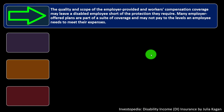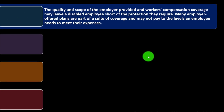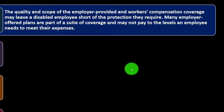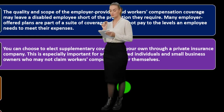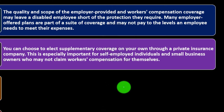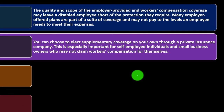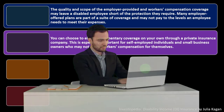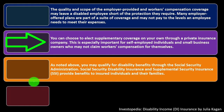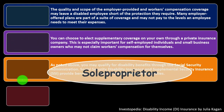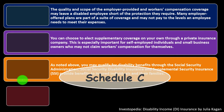The quality and scope of employer-provided and workers' compensation coverage may leave a disabled employee short of the protection they require. Many employer-offered plans may not pay to the level an employee needs to meet their expenses. You can choose to elect supplementary coverage through a private insurance company. This is especially important for self-employed individuals and small business owners who may not claim workers' compensation for themselves — for example, a sole proprietor reporting on a Schedule C of the tax return.